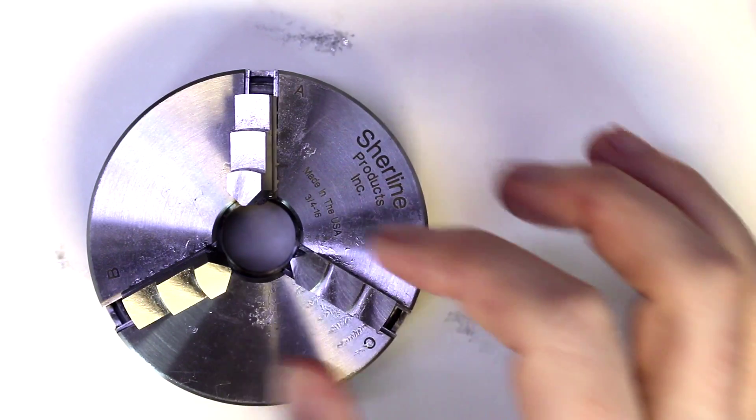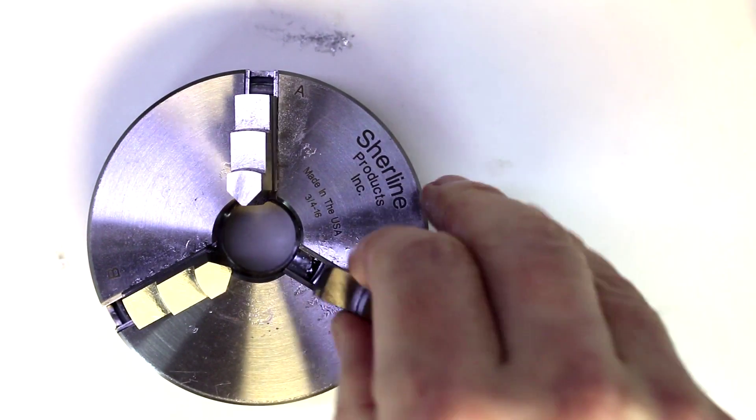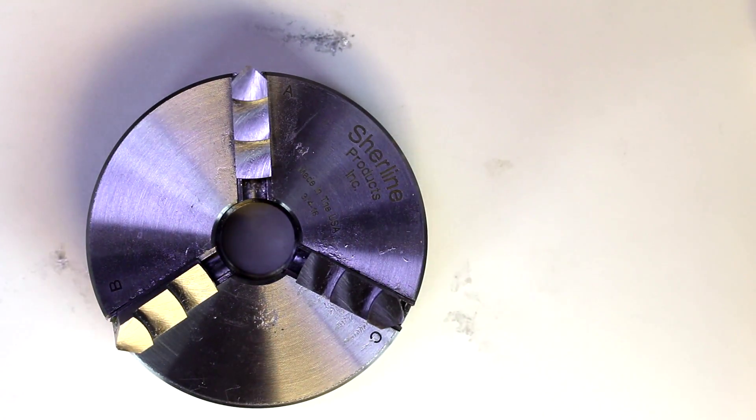Now we couldn't go very large there. But if we reverse these around, what happens is now we can hold much larger pieces both internally and externally on these jaws.